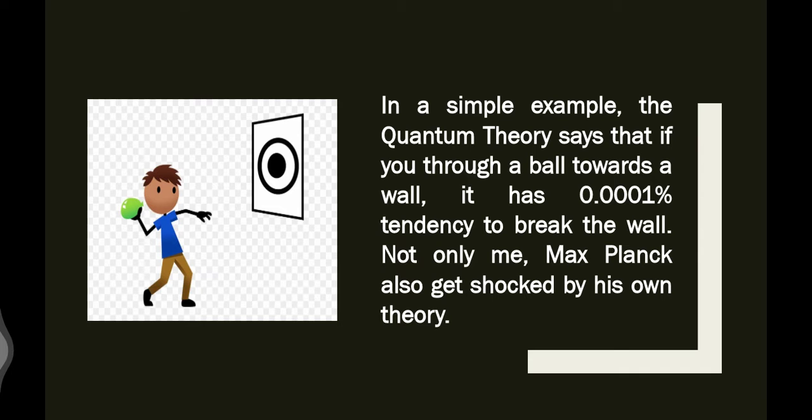If we talk about quantum mechanics, here's a simple example. In reality, if you throw a ball towards a wall, it will collide and move back. But quantum theory says that the ball has 0.0001 percent tendency to break the wall. Imagine you have very little pocket money and you bought your dream ball. You want to play with the wall, your father is not in, your mother is at work, and you throw that ball towards the wall and the wall breaks. Now what do you have? Neither your pocket money nor your ball, and your mother and father will be angry. This is the main disadvantage of quantum theory. Not only me, Max Planck also got shocked by his own theory. It's a hypothesis, but it's real that the ball has 0.0001 percent tendency to break the wall.